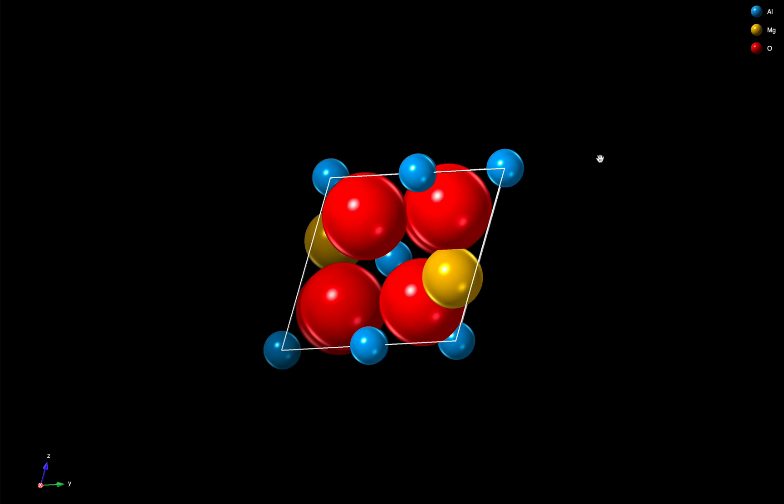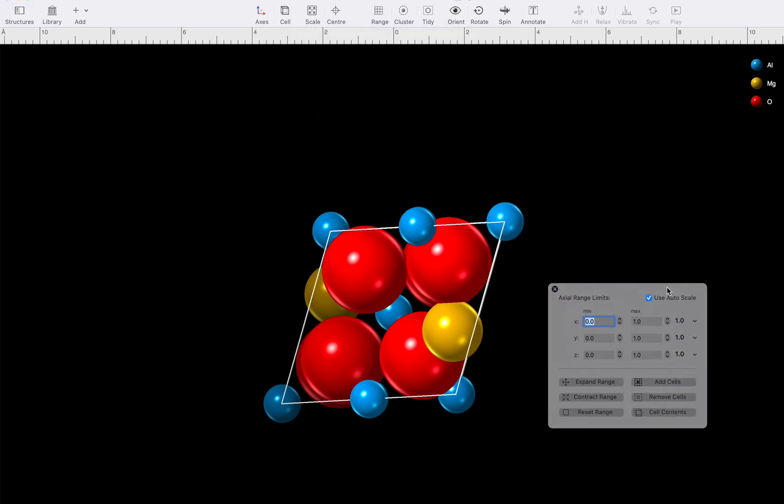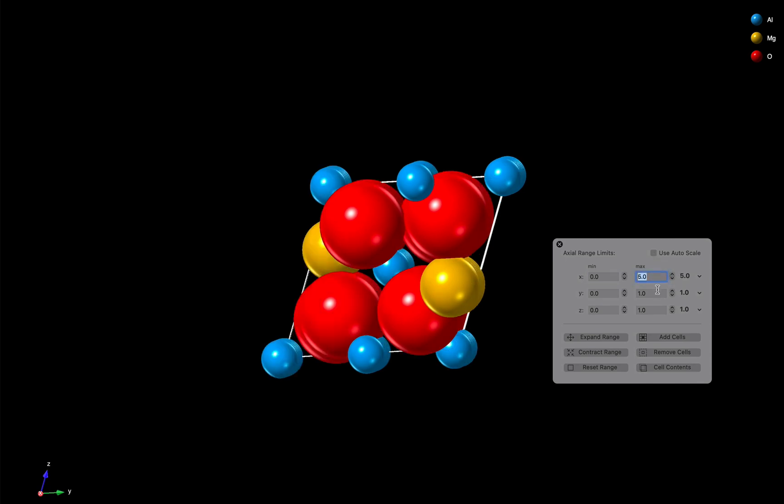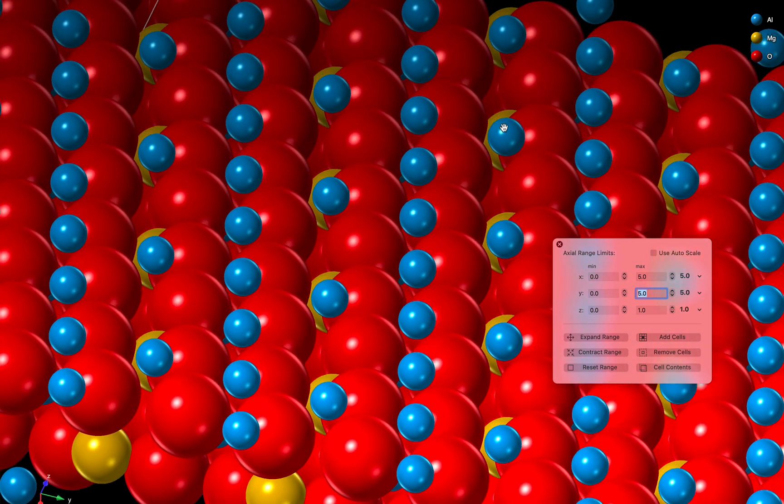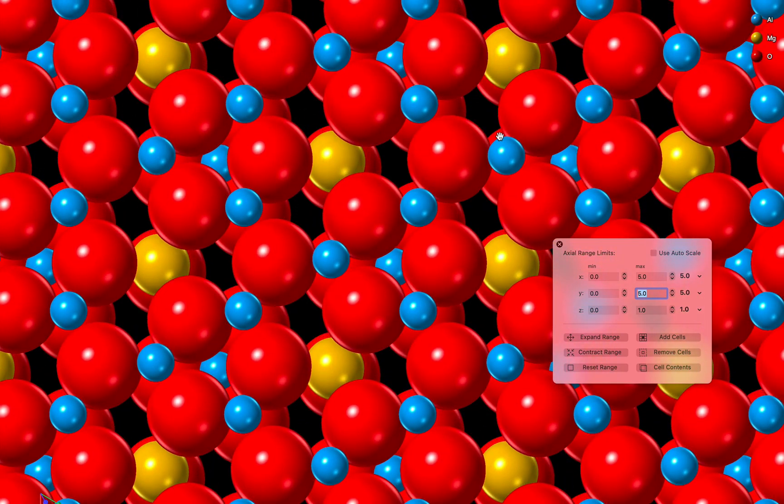Let's use the range popover to show more. We'll start by adding more atoms parallel to the plane along X and along Y. You should now be able to recognise this as the former 111 orientation that we looked at earlier.